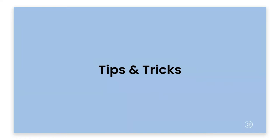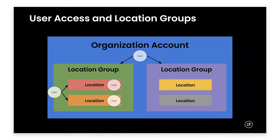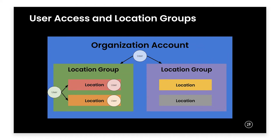Now let's move on to some tips and tricks, starting with user access and location groups. This is an abstract concept in Google Business Profile that people have questions on all the time, so hopefully we can demystify it. There are a few different levels of objects on the Google side. There's an organization account, and within that there are what are called location groups or business groups — think of these as folders of locations — and then there are the locations themselves.